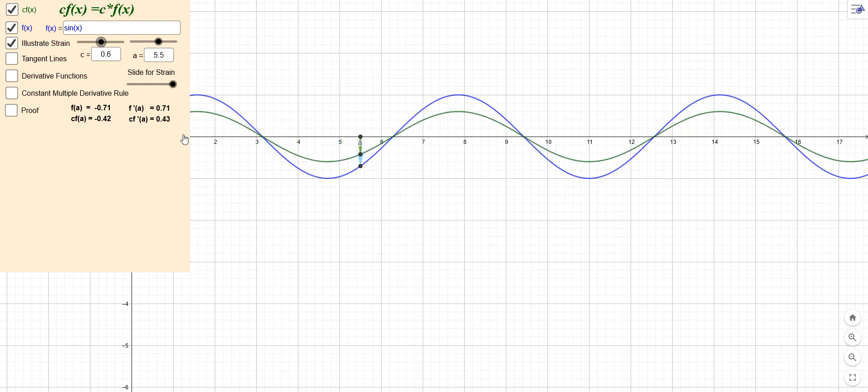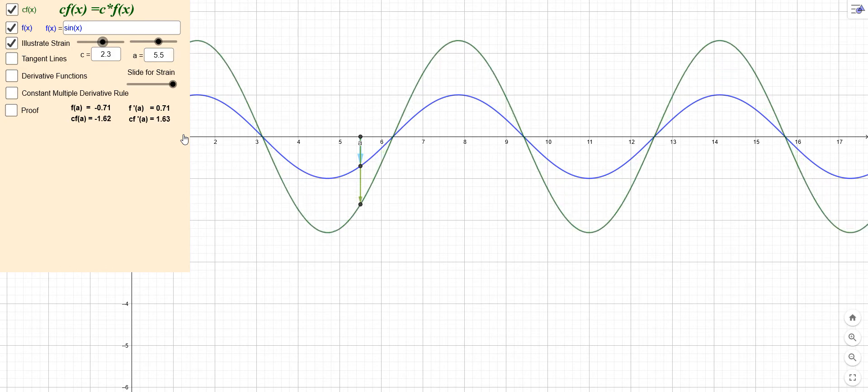If c is one, it's the same function, right? And as we let c be bigger than one, we're stretching this thing further away from the x-axis. So the points that are farther away from the x-axis move even farther away, and the ones that are on the x-axis don't move at all. The ones that are further down move further down, so they just move further away from the x-axis unless they're on the x-axis - then they don't move. And they move by a factor of whatever c is.